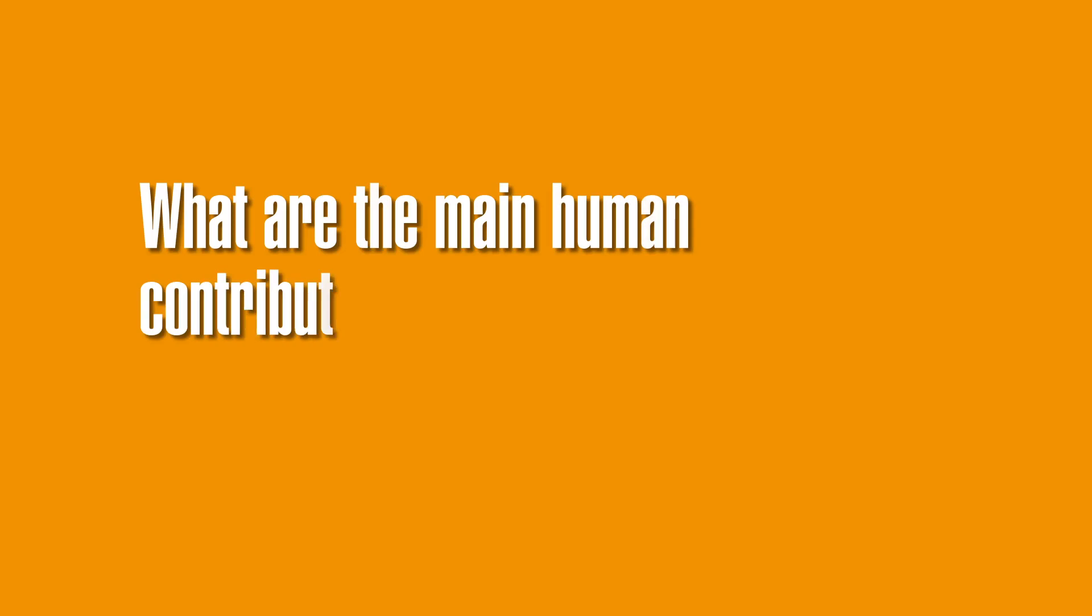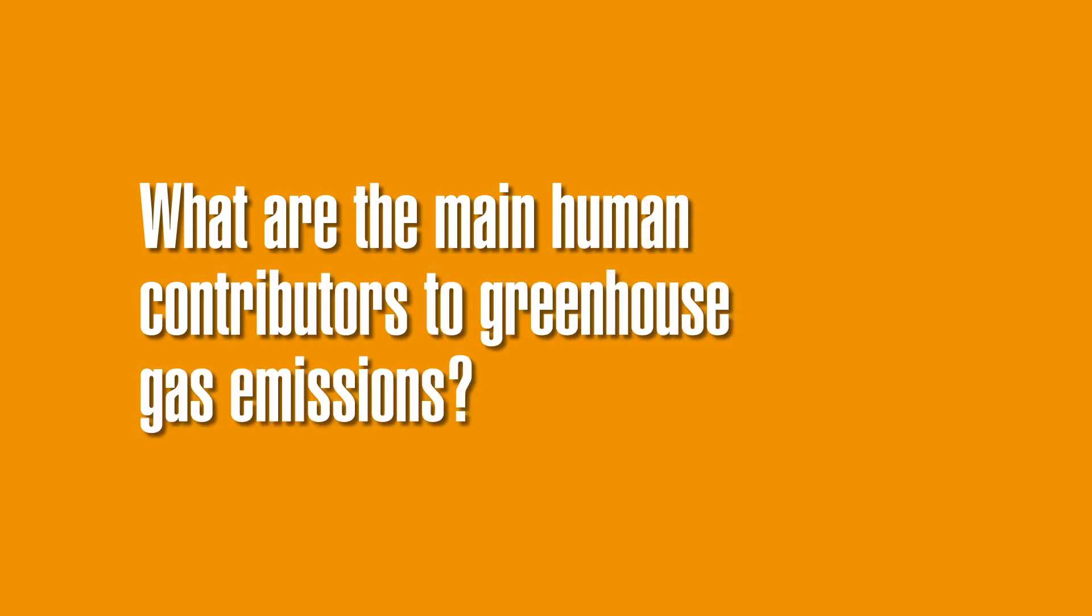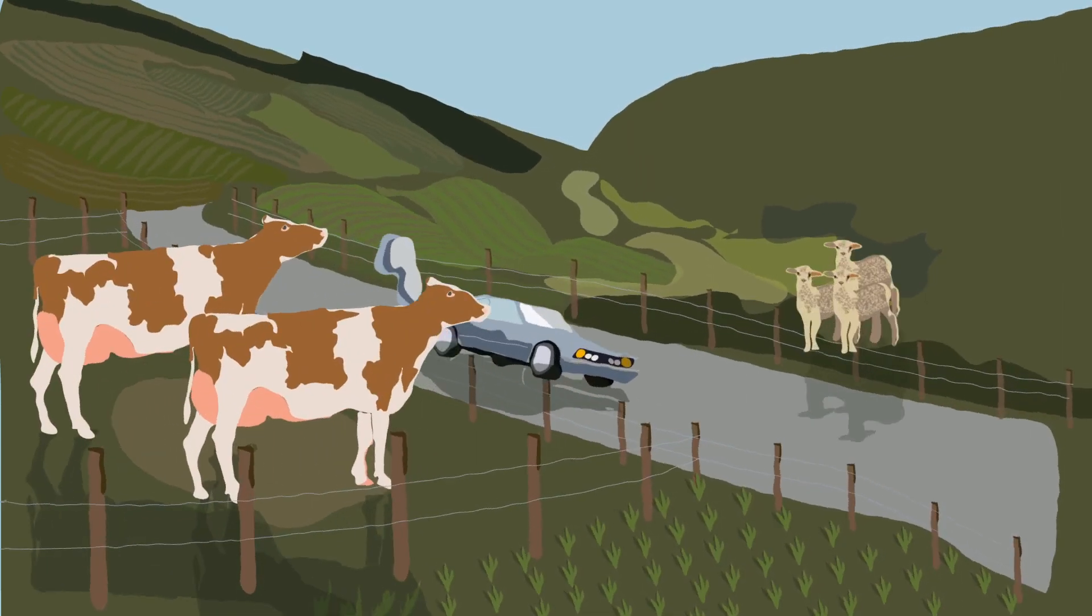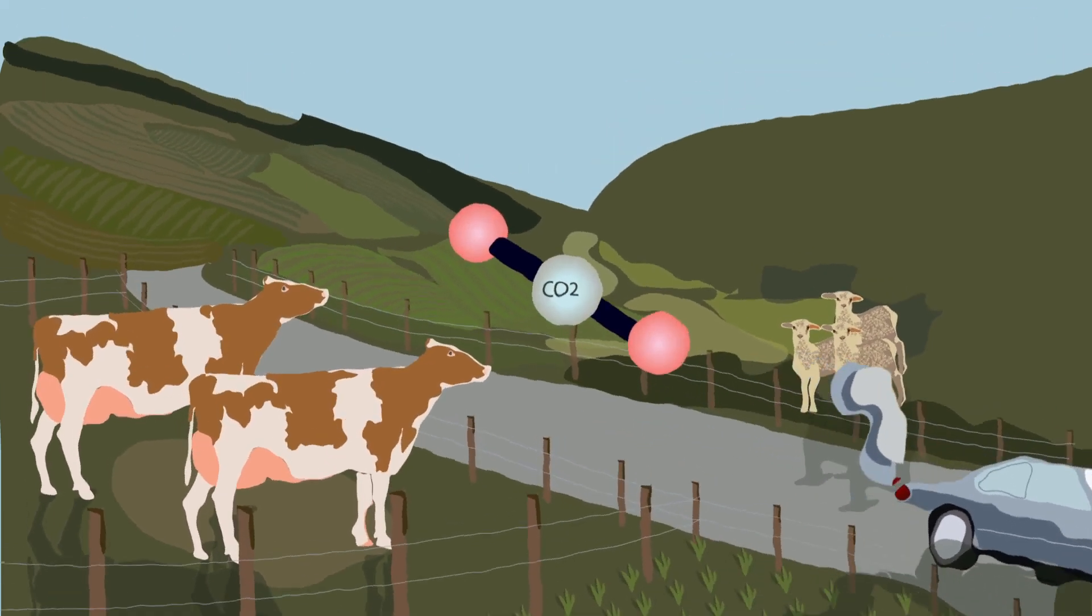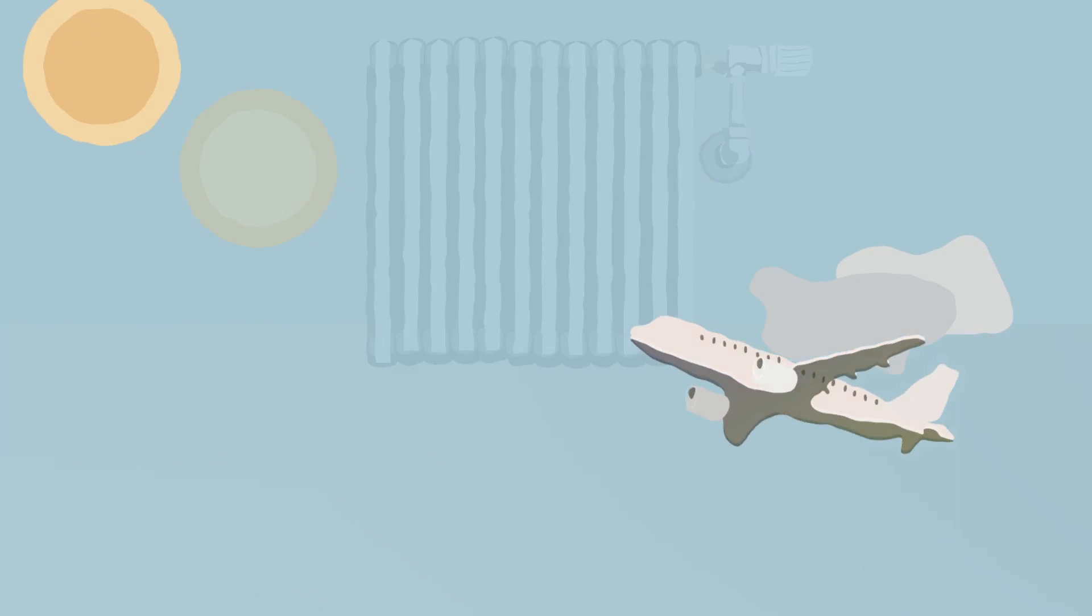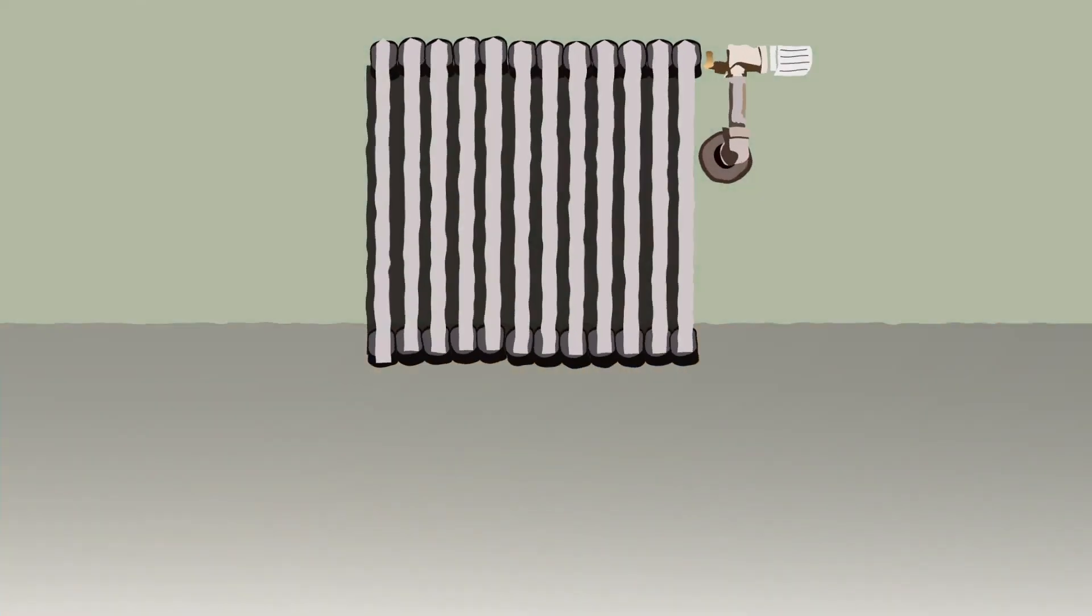So, what are the main human contributors to greenhouse gas emissions? Humans are generating greenhouse gases from two primary sources: burning fossil fuels and raising animals for slaughter. The burning of fossil fuels emits vast amounts of carbon dioxide. Every time that a plane takes off, the heating is turned on in your home, or a car speeds down the motorway, carbon dioxide is being released as a result.